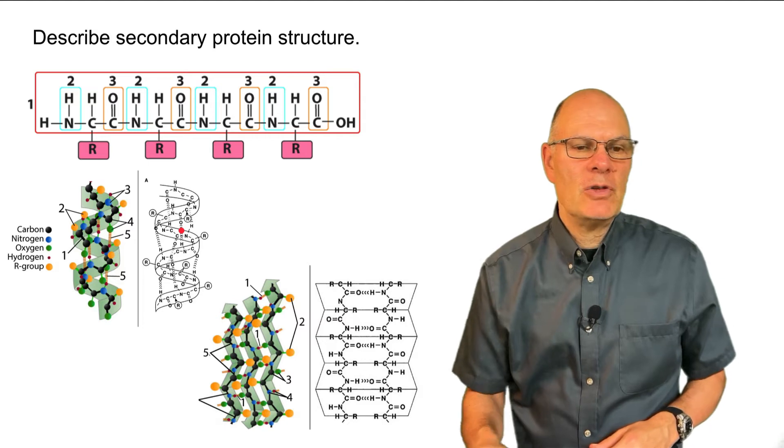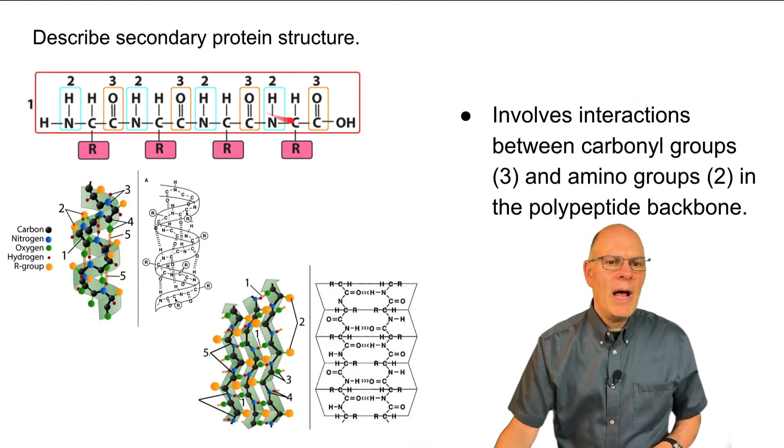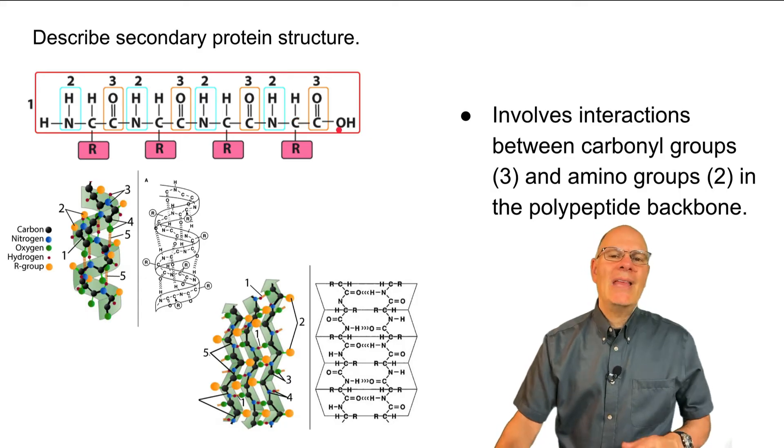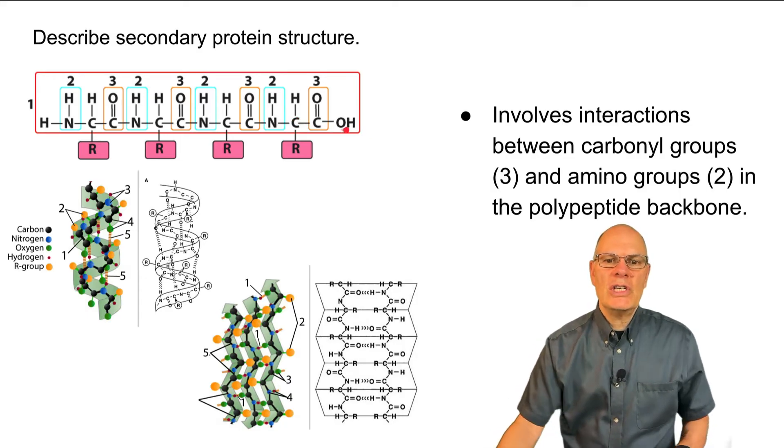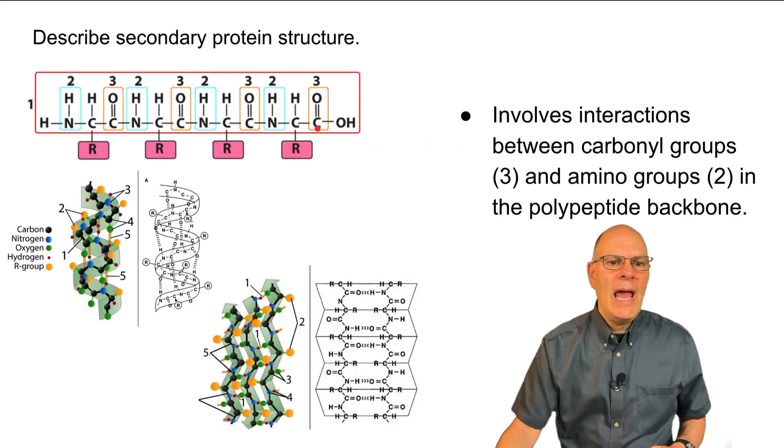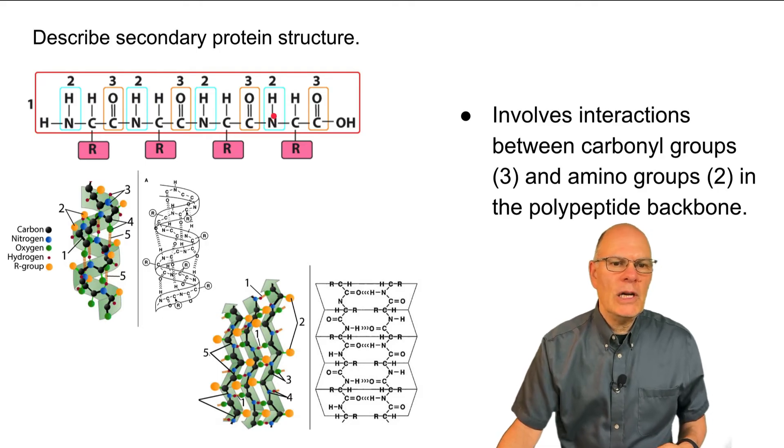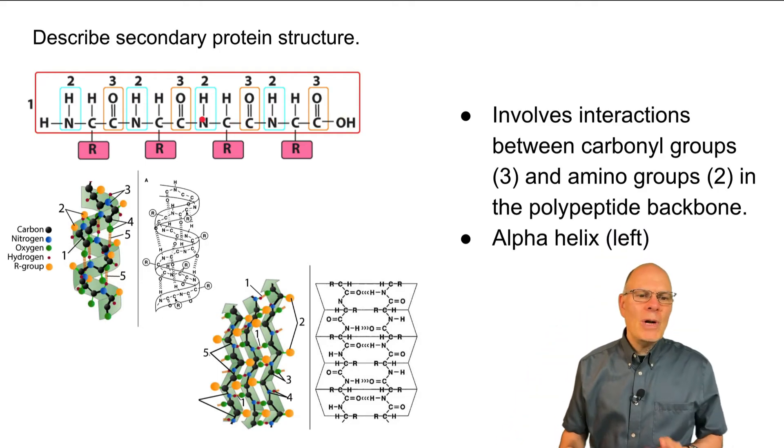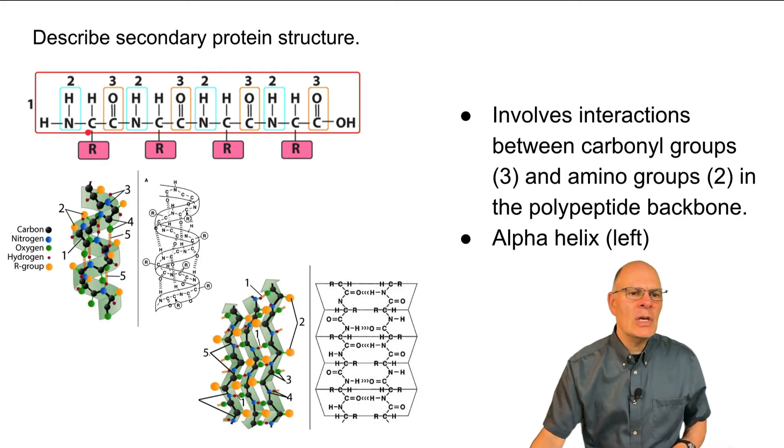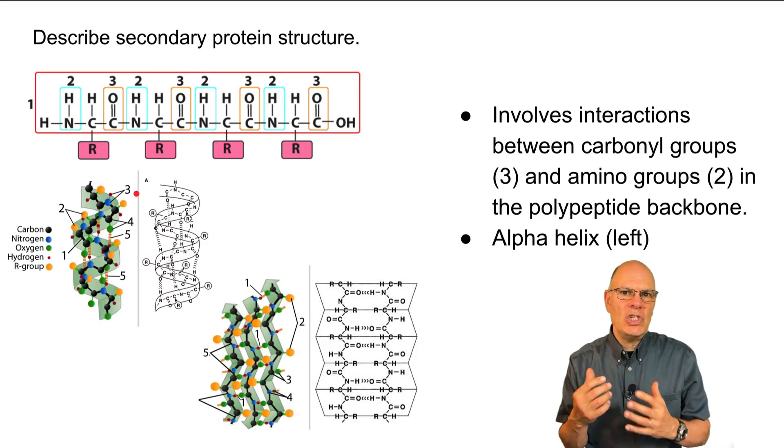What's secondary structure? Well, here you have a nice diagram that shows you what that polypeptide backbone is. And the secondary structure emerges as interactions between the carbonyl groups over here and the amino or amine groups over here within the polypeptide backbone. Now, what happens is that interactions between these amine groups and these carbonyl groups, they form hydrogen bonds and they stabilize certain shapes.